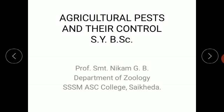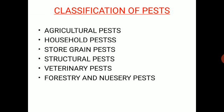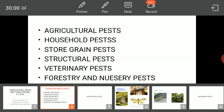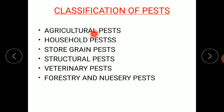Next we look at the classification of pest. Pests are classified into the following types: agricultural pest, household pest, stored grain pest, structural pest, veterinary pest, and forestry and nursery pest. Pests are specifically classified into all these types.